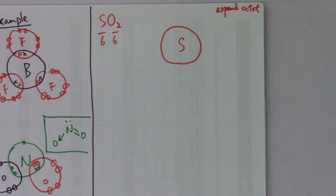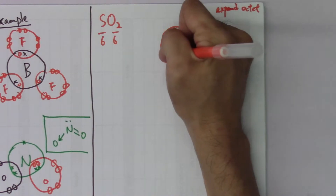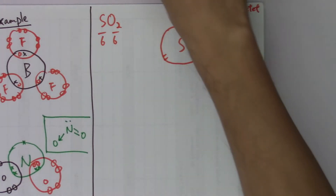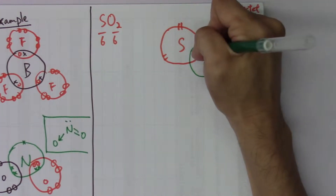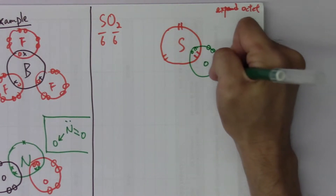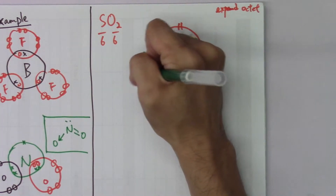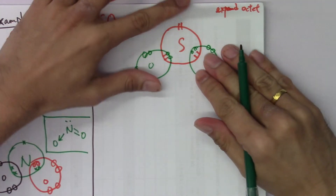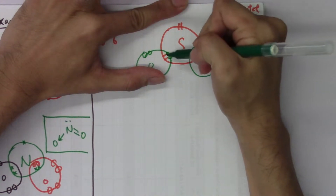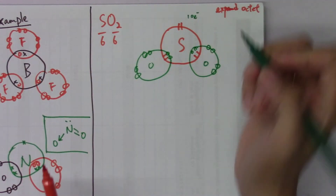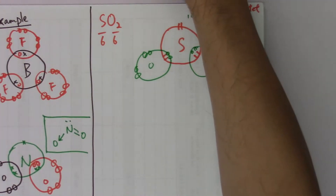Sulfur can expand its octet to contain more electrons, so it shares four electrons with a nearby oxygen atom. Oxygen can also share two electrons with sulfur, and another oxygen shares two more. When we count the total electrons on this central sulfur atom, we get ten electrons — quite different from the octet structure.